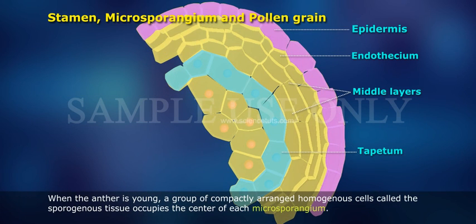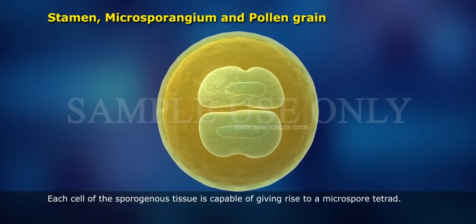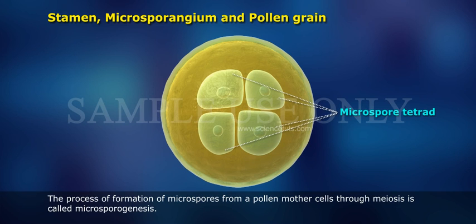When the anther is young, a group of compactly arranged homogeneous cells called the sporogenous tissue occupies the center of each microsporangium. Each cell of the sporogenous tissue is capable of giving rise to a microspore tetrad. The process of formation of microspores from pollen mother cells through meiosis is called microsporogenesis.